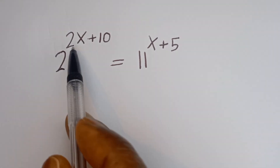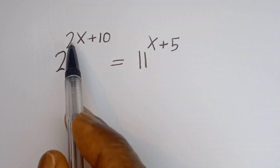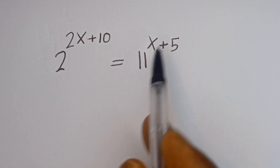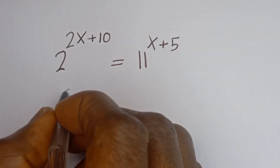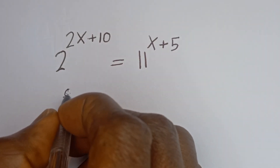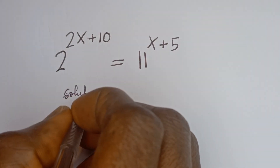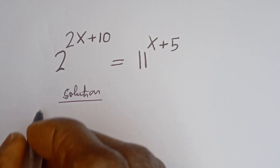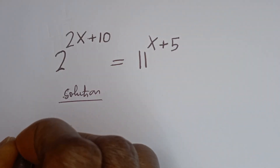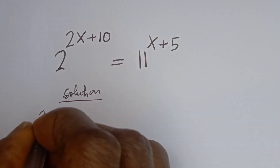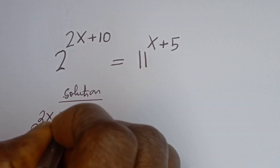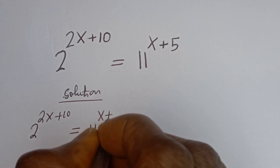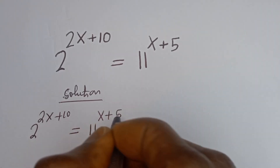Hello. How to solve for x in this equation: 2 to the power of 2x plus 10 is equal to 11 to the power of x plus 5.